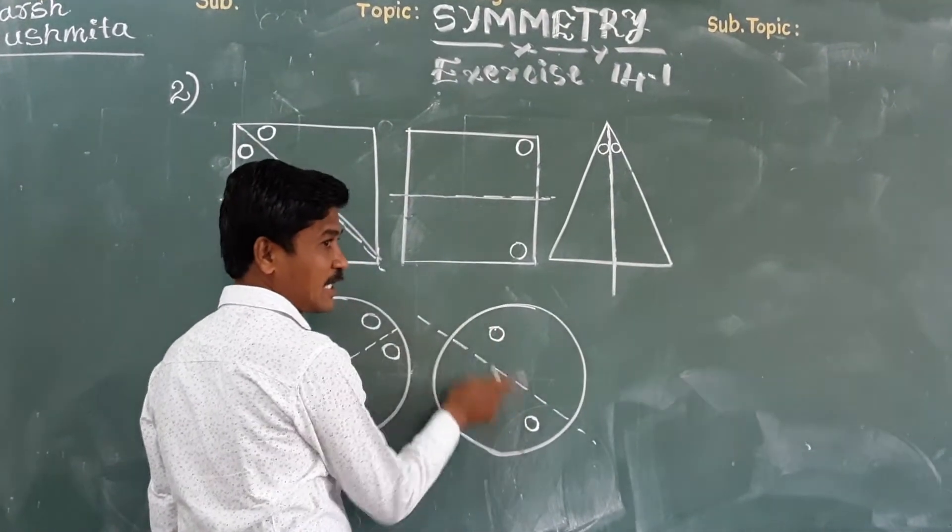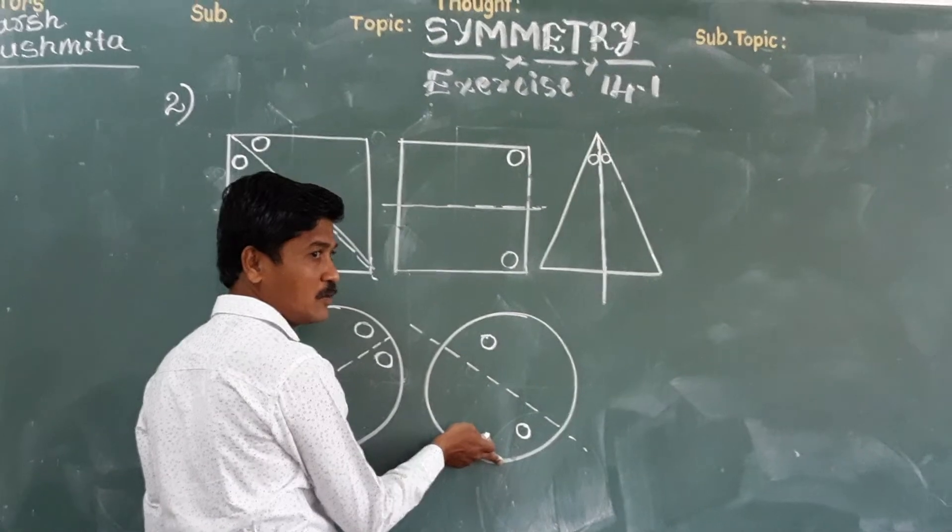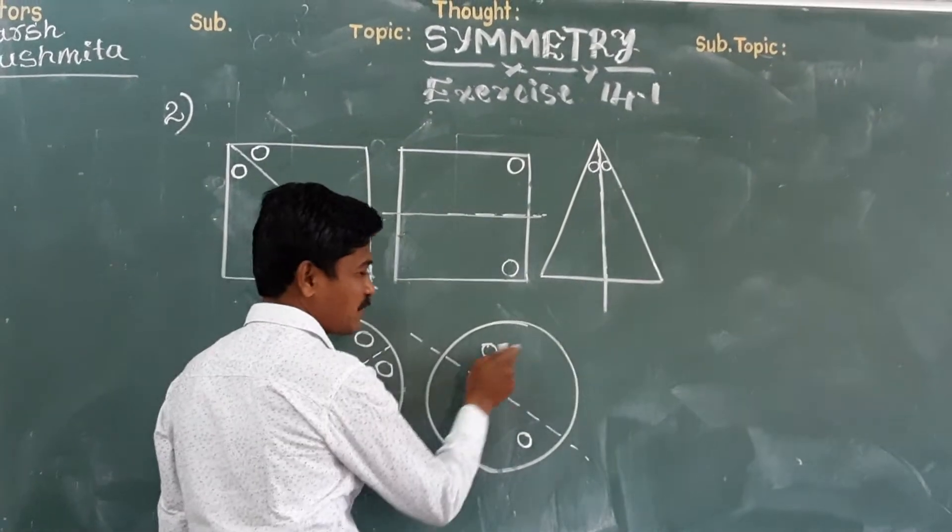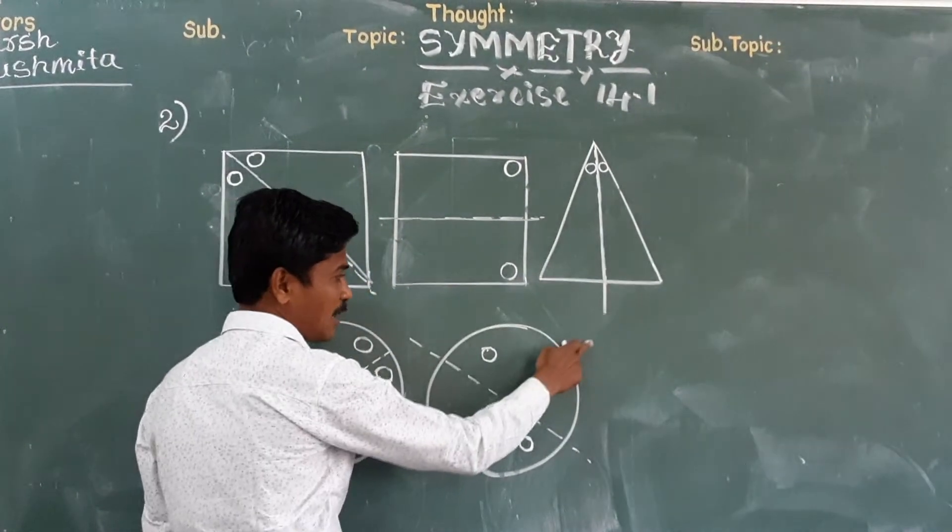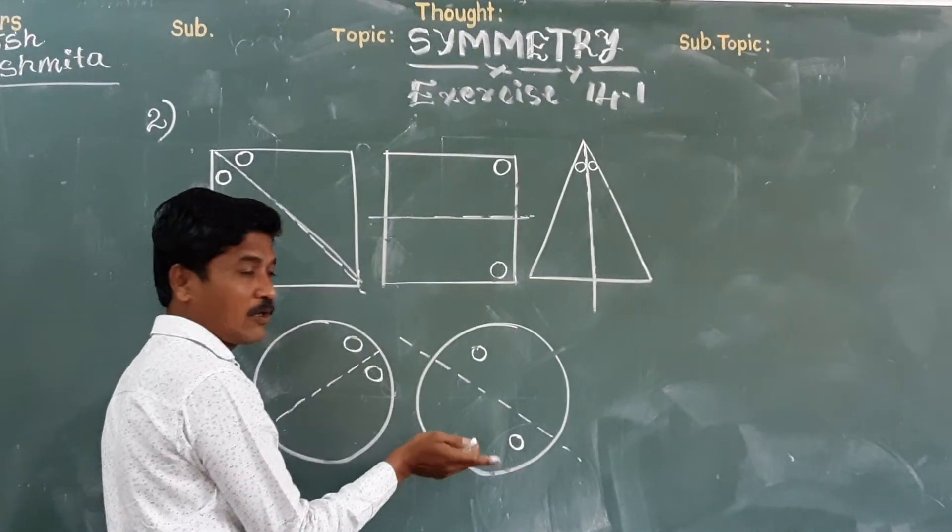Where are both exactly falling on each other? No sir. Because the line of symmetry is not here. If the line of symmetry is here, they are falling on each other. Okay.